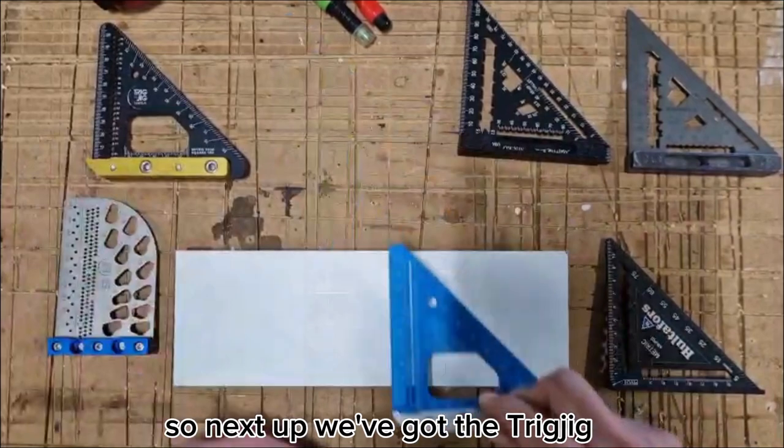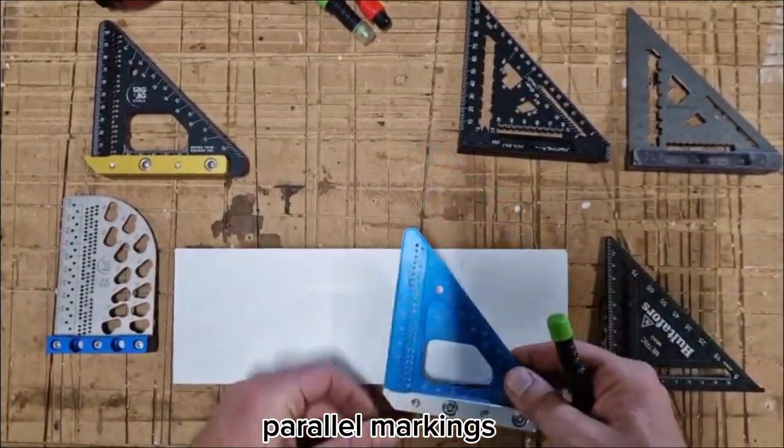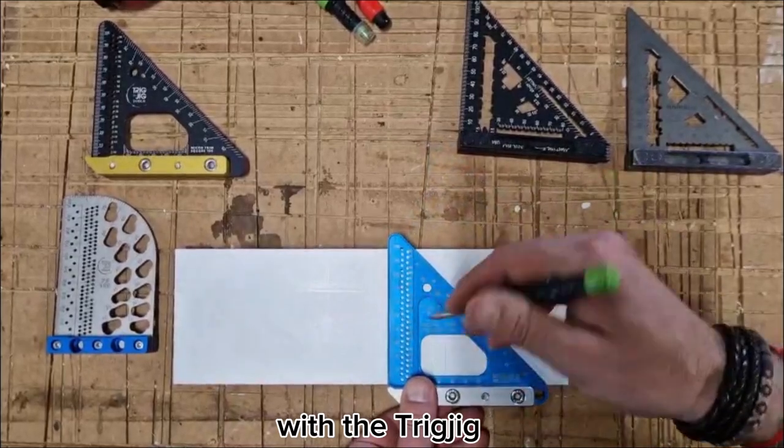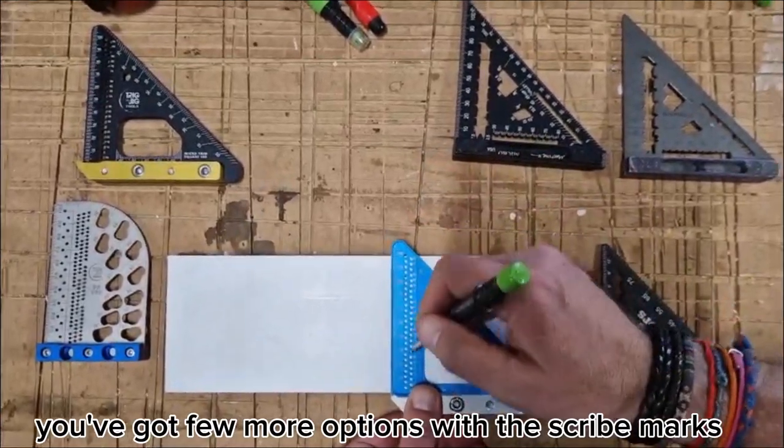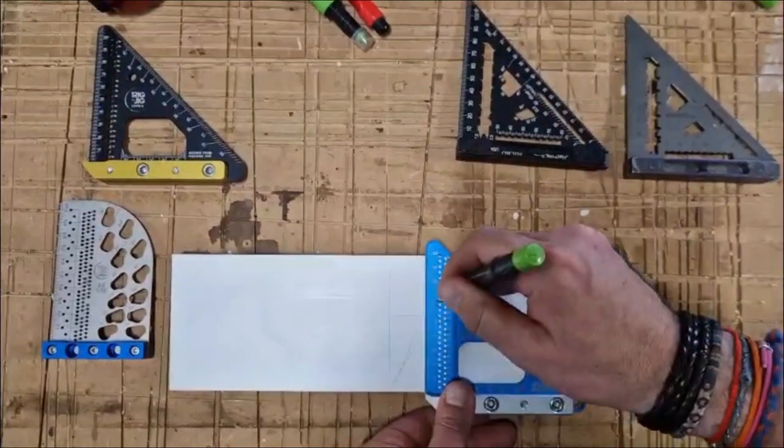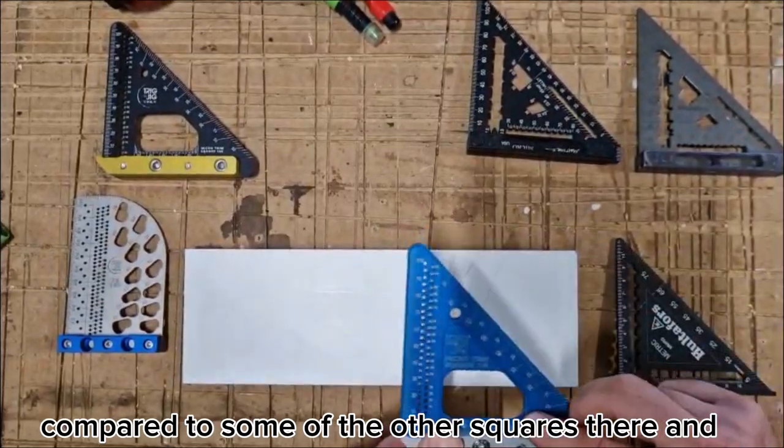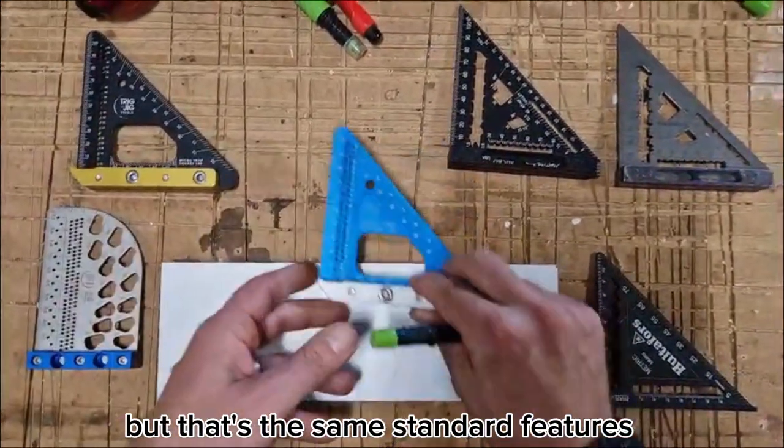Next up we've got the Treejig. Again, angles down the side here, parallel markings. With the Treejig you've got a few more options with these scribe marks. These marks are every two millimeters, so you've just got a little bit more accuracy compared to some of the other squares, but the same standard features.